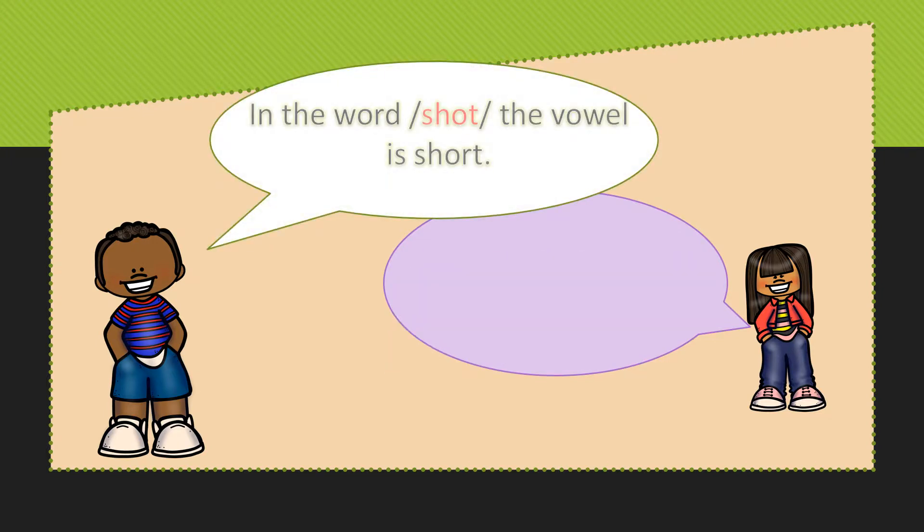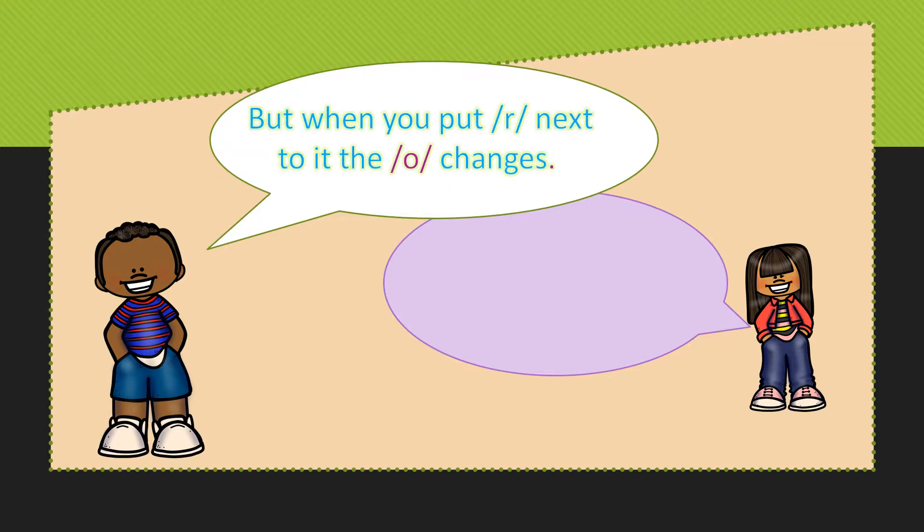In the word shot, the vowel is short, but when you put an R next to it, the O changes its sound. The word becomes short.